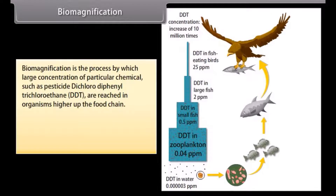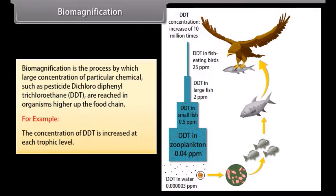Biomagnification is the process by which large concentrations of a particular chemical, such as pesticide dichlorodiphenyl trichloroethane (DDT), are raised in organisms higher up the food chain. For example, the concentration of DDT is increased at each trophic level, as shown in the diagram.